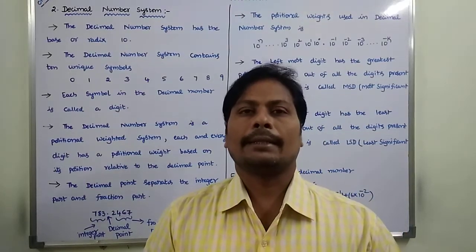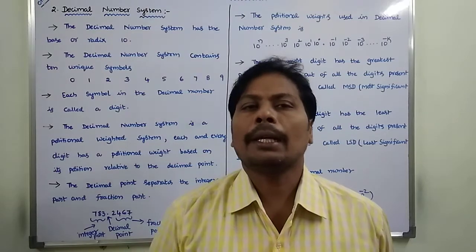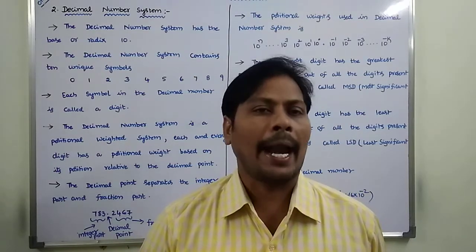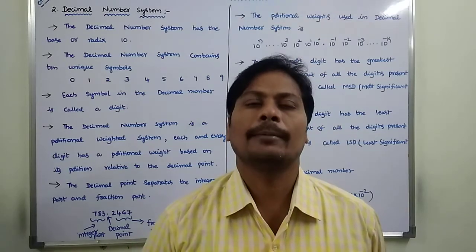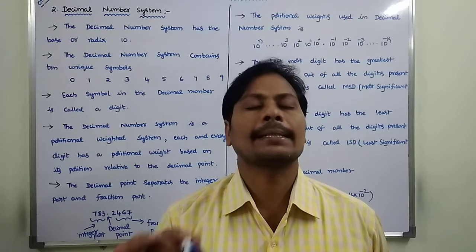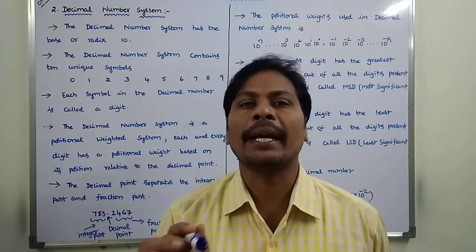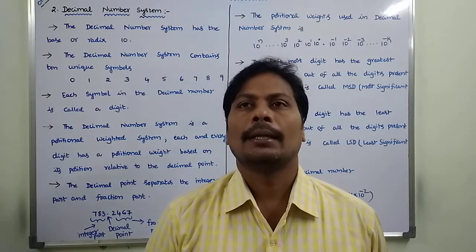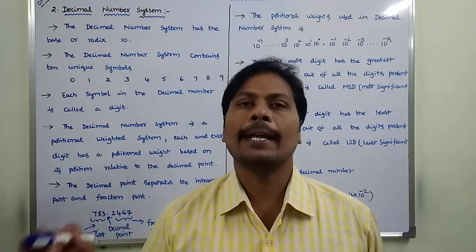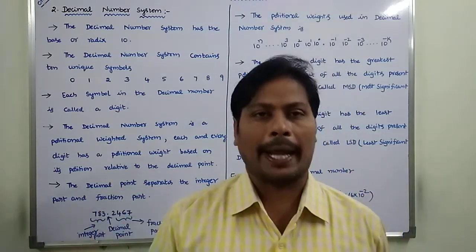The second one is the decimal number system. The decimal number system has the base or radix of 10. Because of base or radix 10, it consists of 10 independent symbols: 0, 1, 2, 3, 4, 5, 6, 7, 8, 9 — that is, 0 to 9.